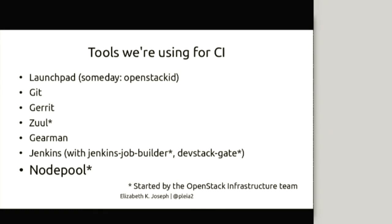On the team, we're writing an OpenStack ID service which will be an authentication system. We use Git for the back end, and Gerrit for code review. We also have a tool called Zuul, which is our gatekeeper — it takes all requests that come in through Gerrit and feeds them into Jenkins to actually run the tests, indirectly through a tool called Gearman, because we have multiple Jenkins masters. We have about eight Jenkins masters; they don't know about each other, but Gearman distributes the jobs intelligently.